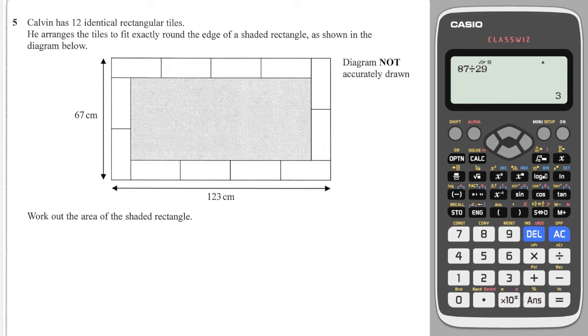I would label the tiles, which are identical, as x and y. So x for the width and y for the length. So if I go around the shape, that would be an x, that would be a y, that would be a y, that would be a y, and that would be a y. And over here, that would be a y, a y, and an x.